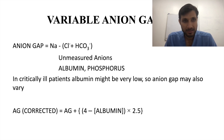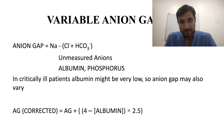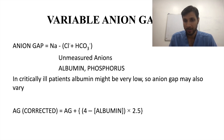Because of variable anion gap, a correction is needed for chronic ill patients with low albumin. The corrected anion gap formula is: corrected anion gap = calculated anion gap + (normal albumin − measured albumin) × 2.5, where the normal albumin is taken as 4 g/dL.